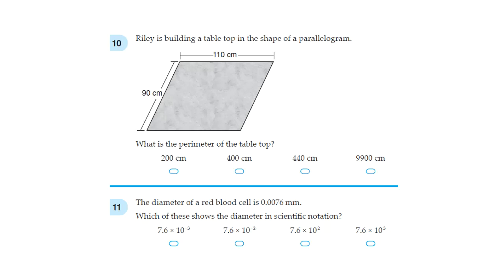Question 10. Riley is building a tabletop in the shape of a parallelogram. What is the perimeter of the tabletop? This one's quite straightforward. Opposite sides are of equal length. So this is going to be 110 cm and this is going to be 90 cm. Now we add everything up to get the perimeter. So 110 plus 90 plus 110 plus 90 gives you a total of 400 cm.